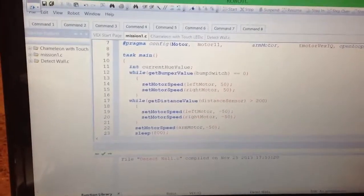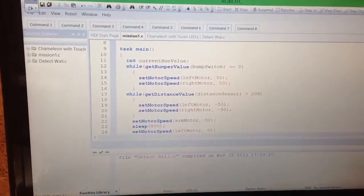So these are just things to configure the motors and sensors. This is a variable for the color sensor.